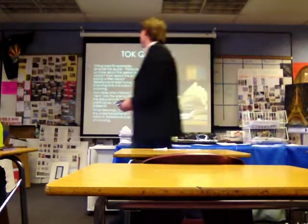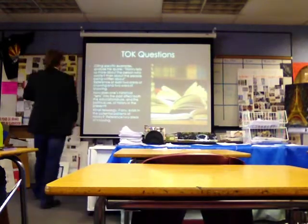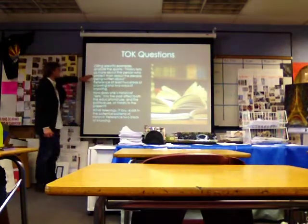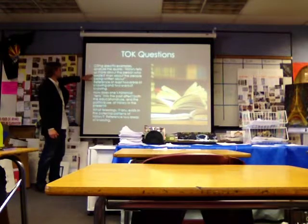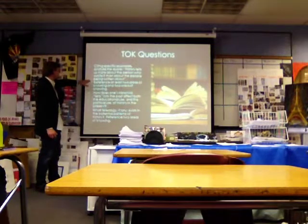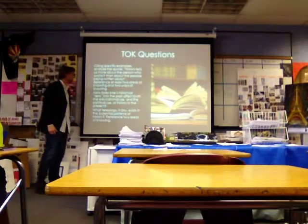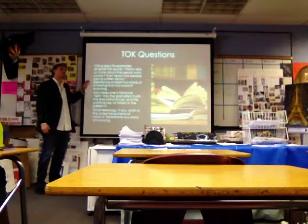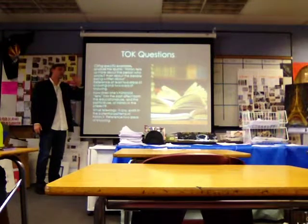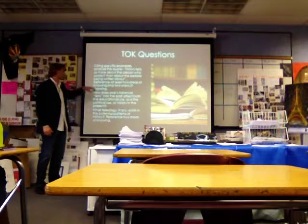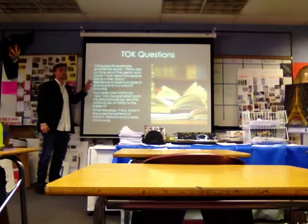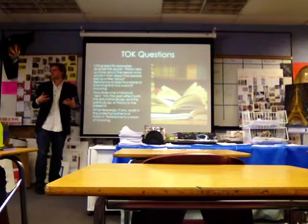You'll be choosing one of these three TOK questions. Citing specific examples, analyze the claim: 'History tells us more about the person who wrote it than about the people being written about.' Reference at least two areas of knowing and two ways of knowing — so you're thinking about things like sense perception and reason, and how those ways of knowing interact with ethics and history.